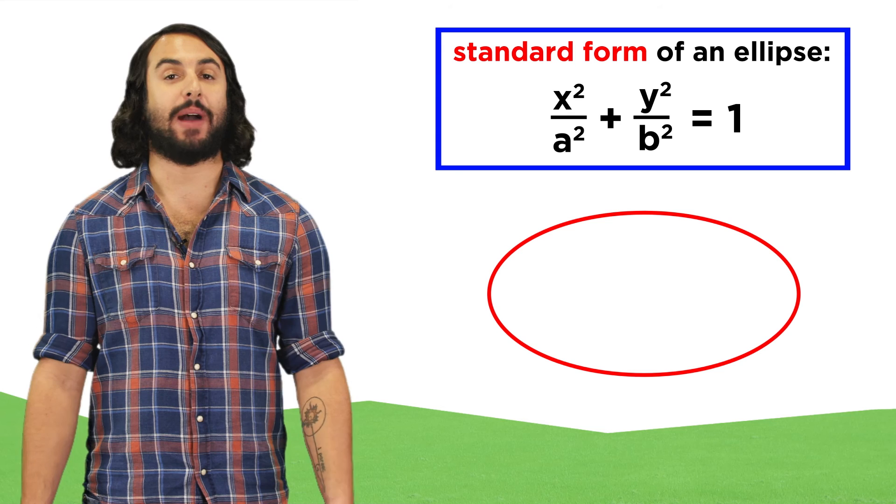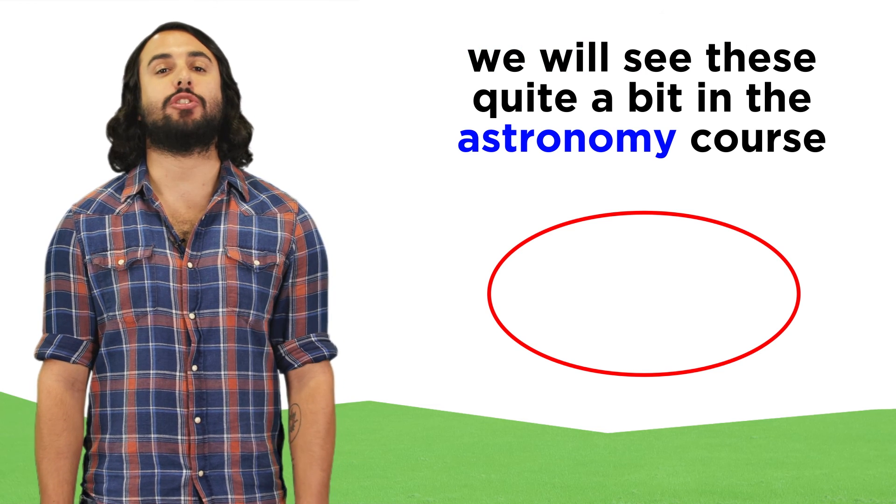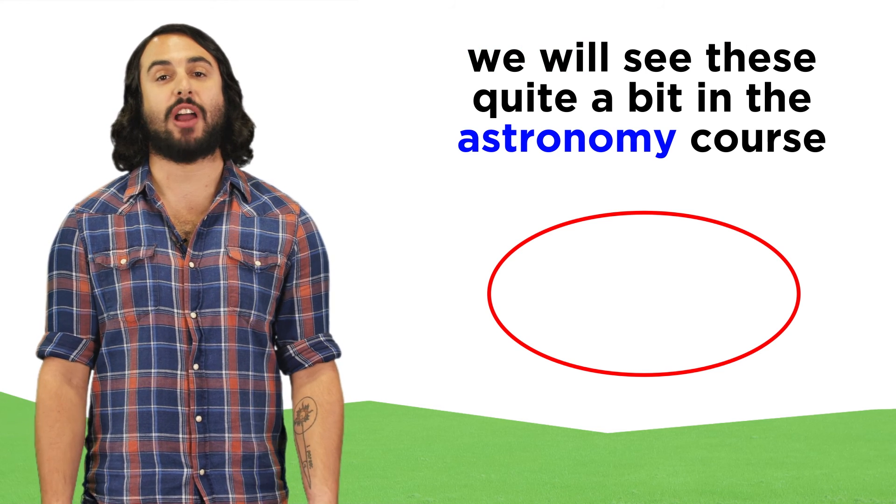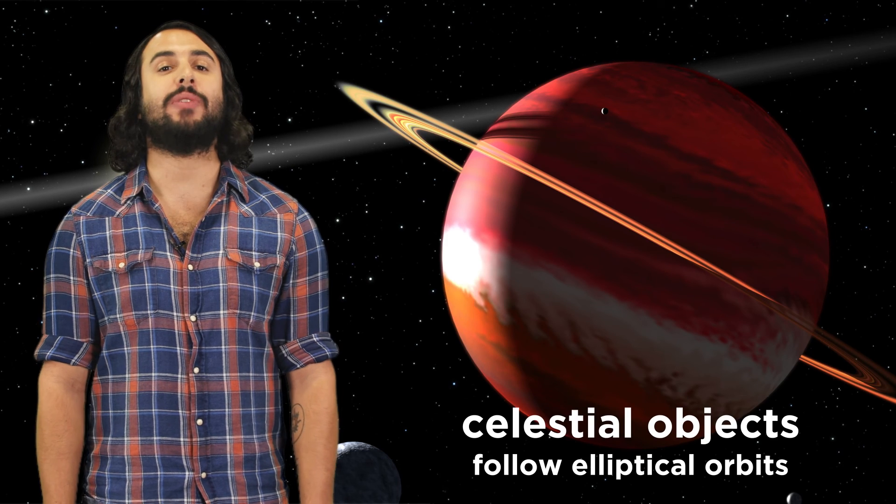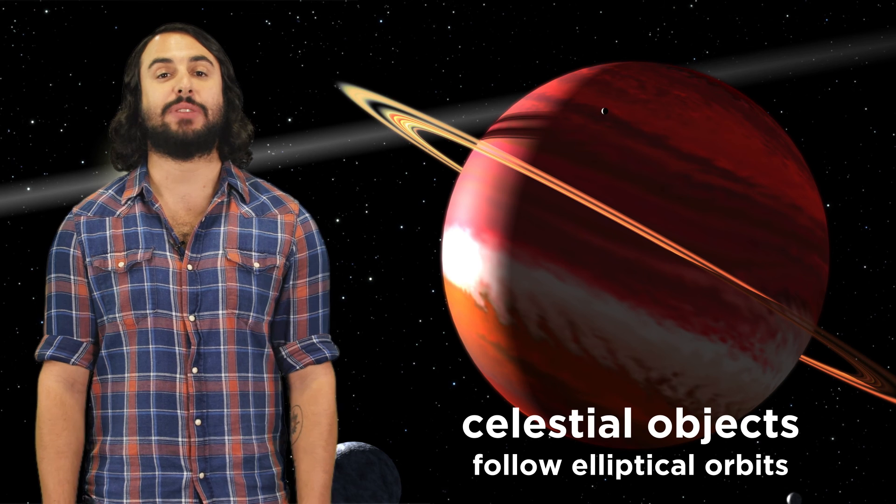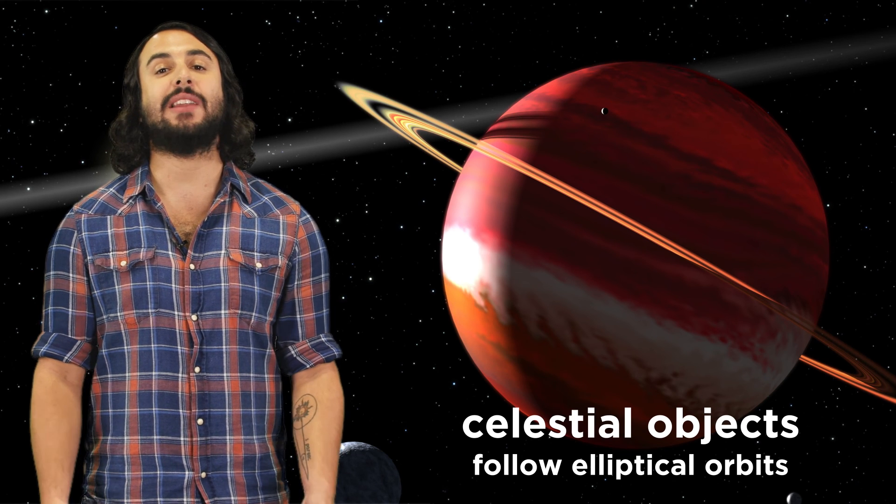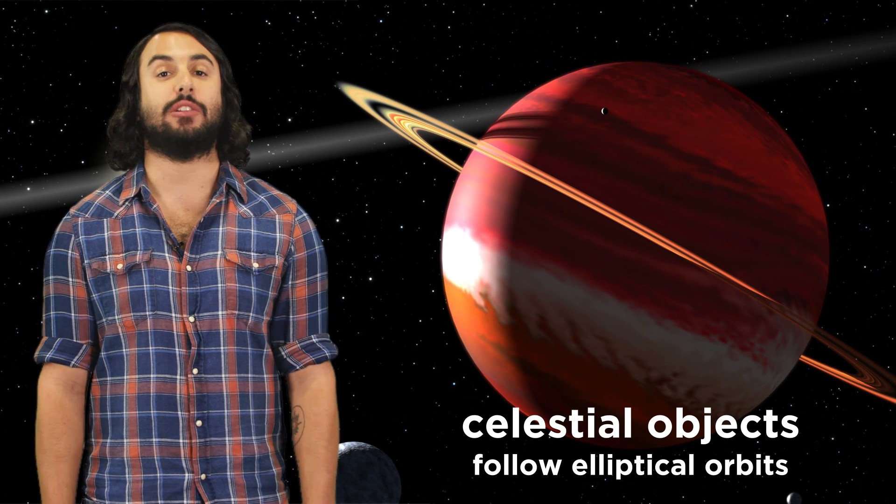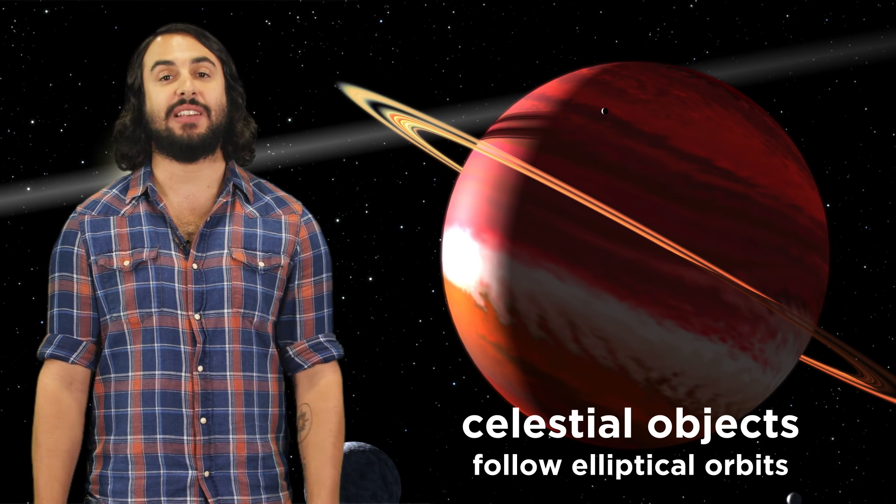That's really all we need to know about ellipses right now. These are extremely important shapes for astronomy and astrophysics, so if you move on to my astronomy course, you will learn all about how celestial objects, like planets and comets, follow elliptical orbits, rather than circular ones as originally thought many centuries ago.